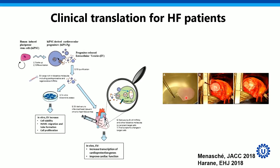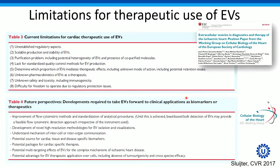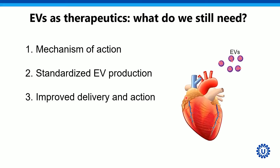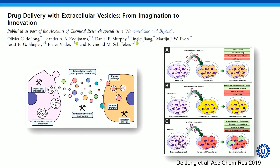I hope it's successful, but I think we still need a lot of improvements to have this in larger populations. And that brings us to the limitations of this therapeutic use. I would like to highlight three of them in the last few minutes. I think these are the three major issues we run into for therapeutics: we have to understand the therapeutic mechanism, work on standardization of EV production, and improve delivery and action — because just in the same way cells showed beneficial effects, these vesicles do as well, but we have to improve that to really make a benefit in the clinical setting.